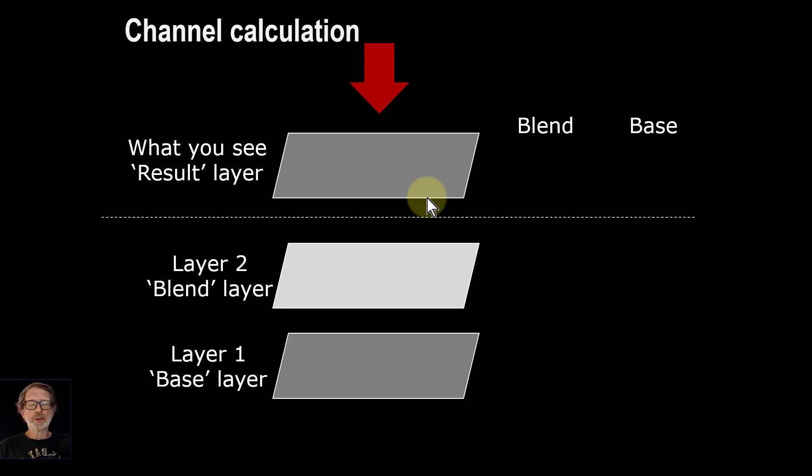So one way of doing this is with reds, greens, and blues and do them separately. In other words, take the red in the base layer and do some calculation involving the red in the blend layer, and separately with the greens and with the blues.